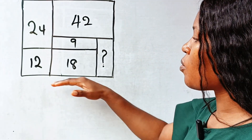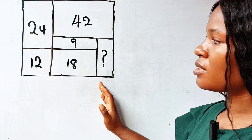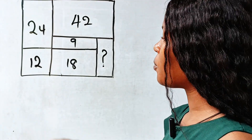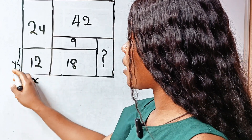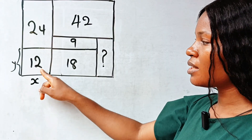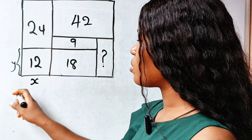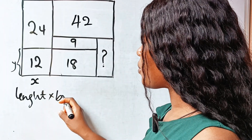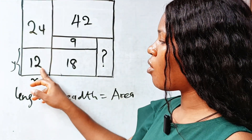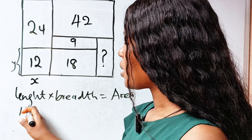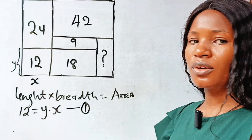The advantage we have here is that some of them share the same base, and some of them share the same height. Let's call this place x, and let's call this y. For the rectangle with area 12, remember that the area of a rectangle is length multiplied by breadth. So that means 12 is equal to y multiplied by x. Let's call this equation one.